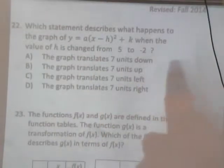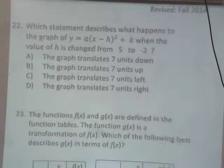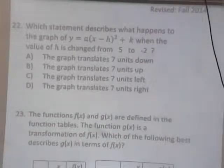Okay, 22. Which statement describes what happens to the graph of y equals blah, blah, blah, when the value of h is changed from 5 to negative 2? Okay. So if we're going to change the value of h from a 5 to a negative 2, in other words, we're going to subtract 7, what's it going to do?